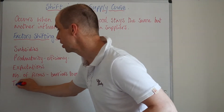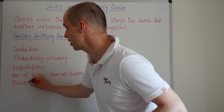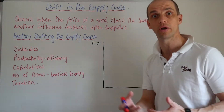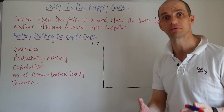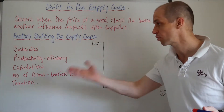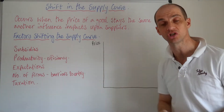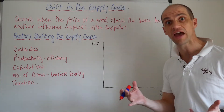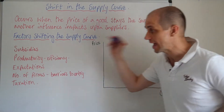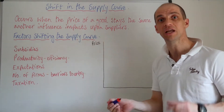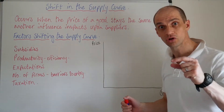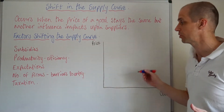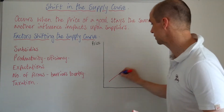And finally, we've got taxation. So if there's any taxation actually imposed upon a given firm's products, then of course that is going to shift the supply curve to the left. In effect, it will mean that the firm will need to pay a certain proportion of that taxation — how much depends upon the elasticities, of course.